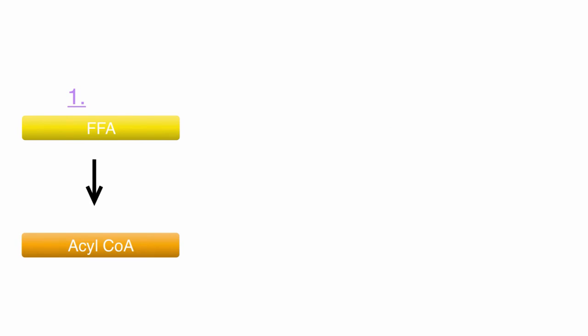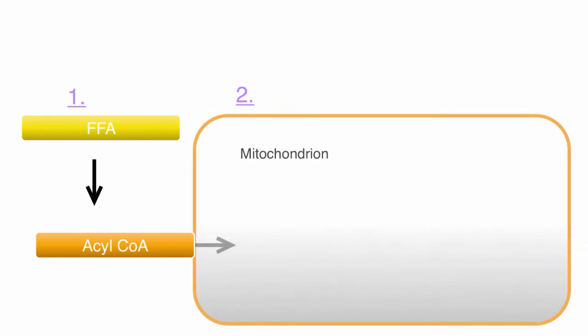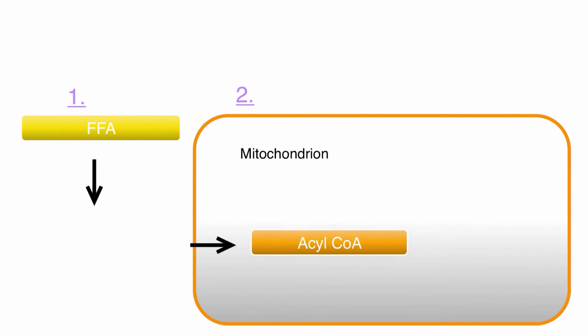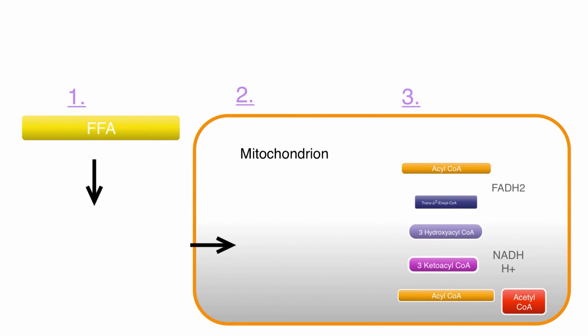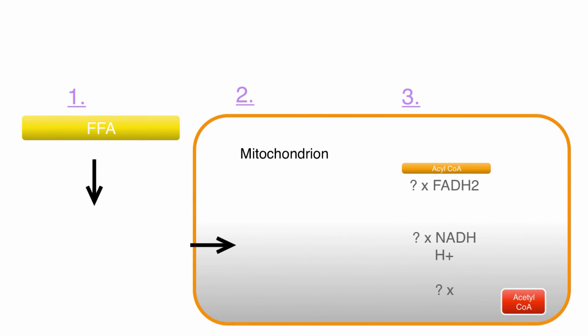What you will need to know from this video: the energy required to make an acyl-CoA molecule from a free fatty acid, the importance and role of carnitine, the four steps of the formal oxidation process along with all its products, and how many of each product are produced when given the carbon chain length.